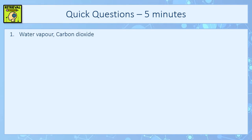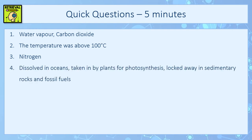Going through the answers: the main gases in the earth's early atmosphere were water vapour and carbon dioxide. There were no oceans in the earth's early atmosphere because the temperature was above 100 degrees — it was too hot. The main gas in the atmosphere today, making up 78%, is nitrogen. Ways in which carbon dioxide has decreased include dissolving in oceans, being taken in by plants for photosynthesis, or being locked away in sedimentary rocks and fossil fuels.